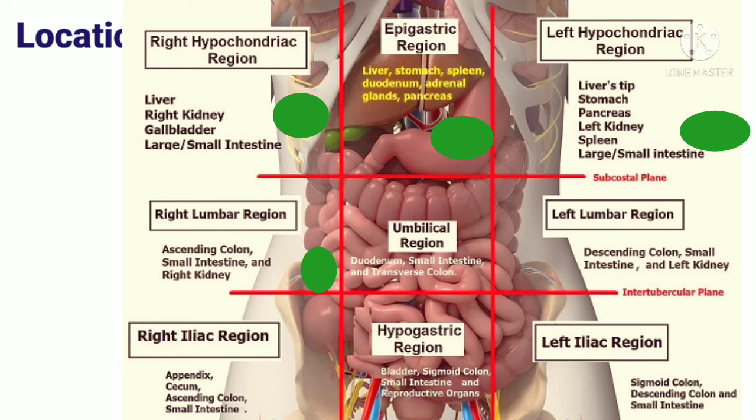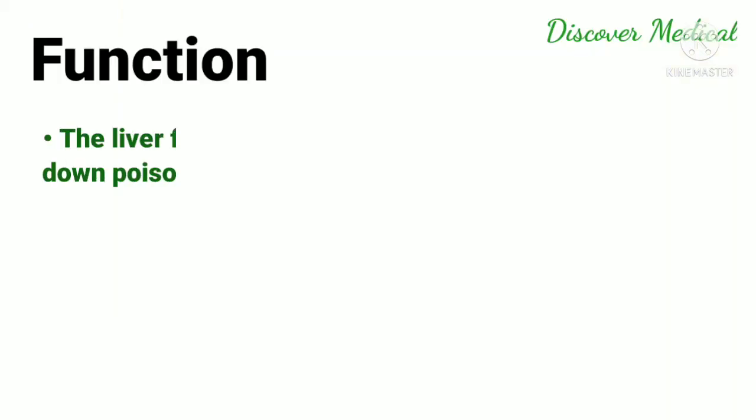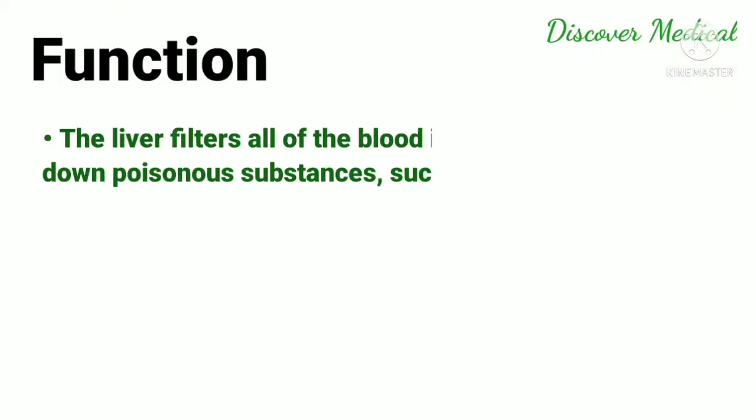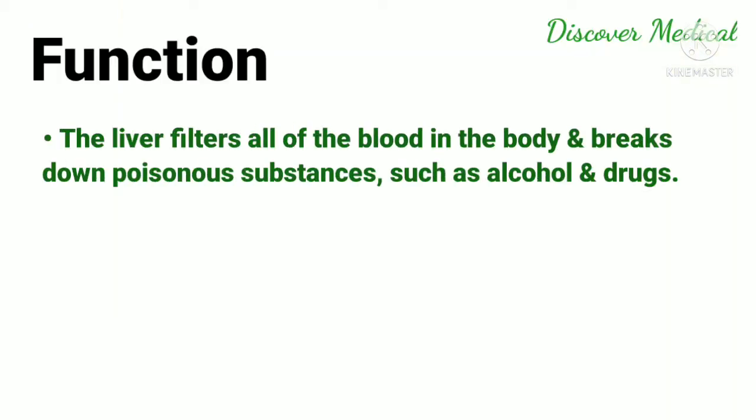The liver almost fully occupies the right hypochondrium region, epigastric region, left hypochondriac region, and right lumbar region.